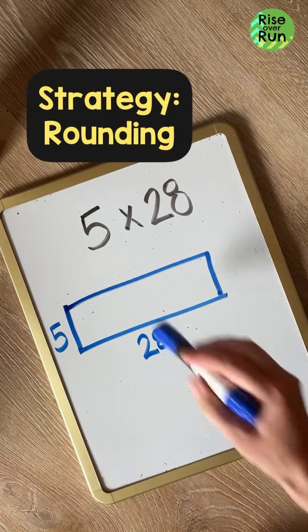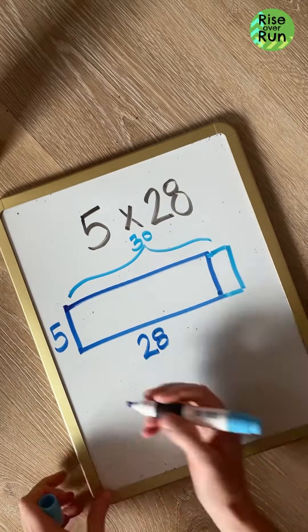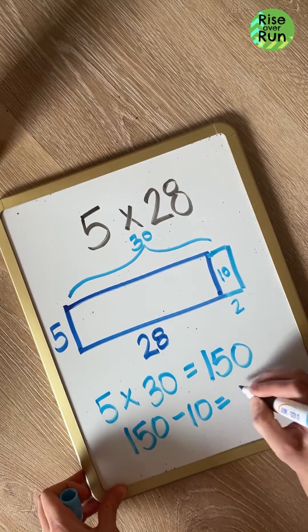Now let's look at rounding as a strategy. I may not know 5 times 28, but I do know 5 times 30. And then once I find that product, I'll compensate by subtracting this extra amount at the end.